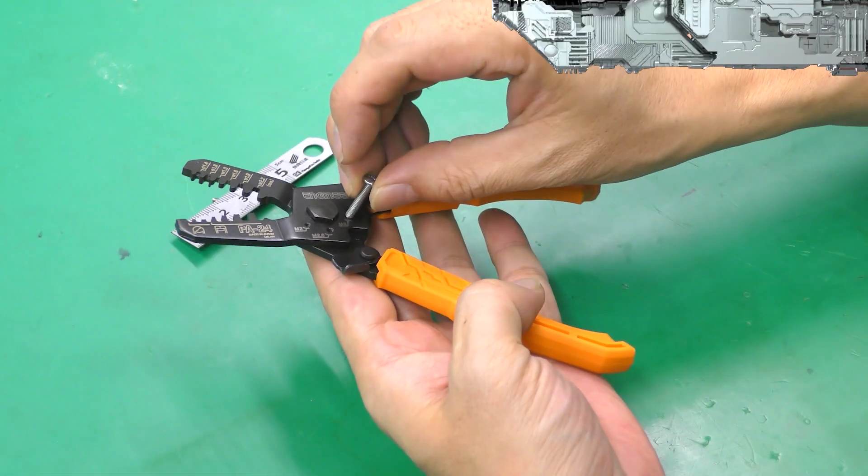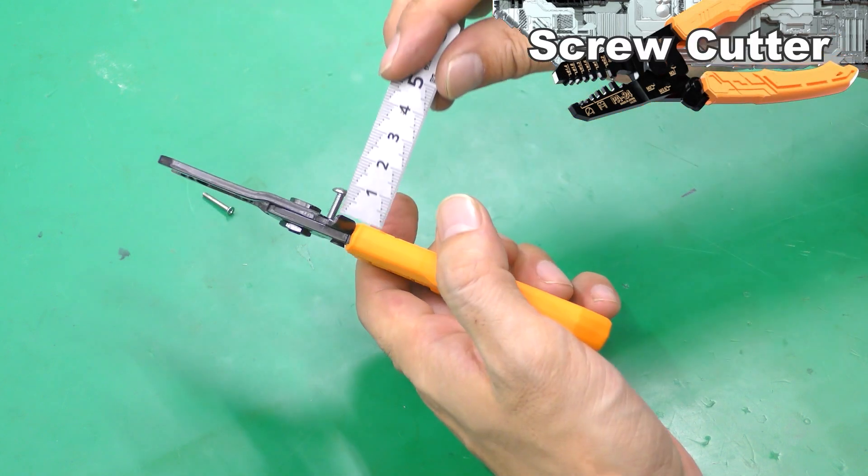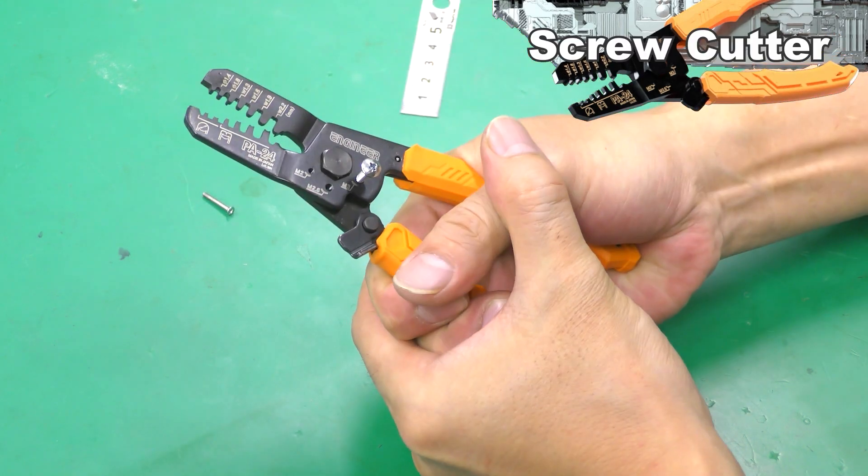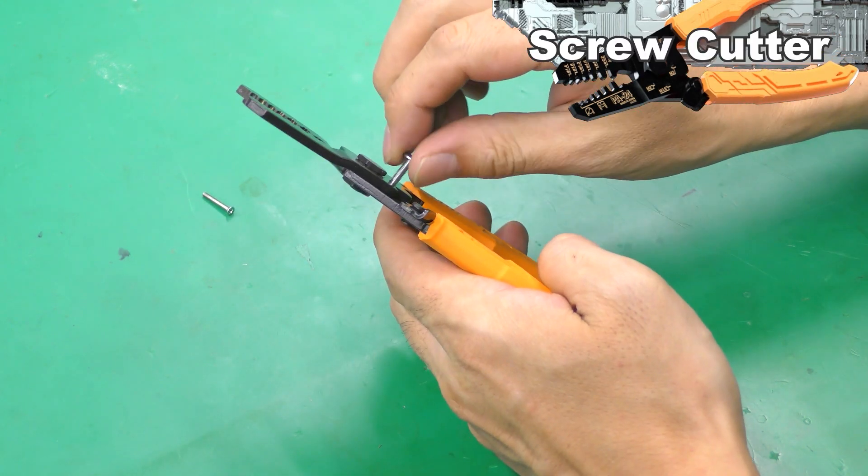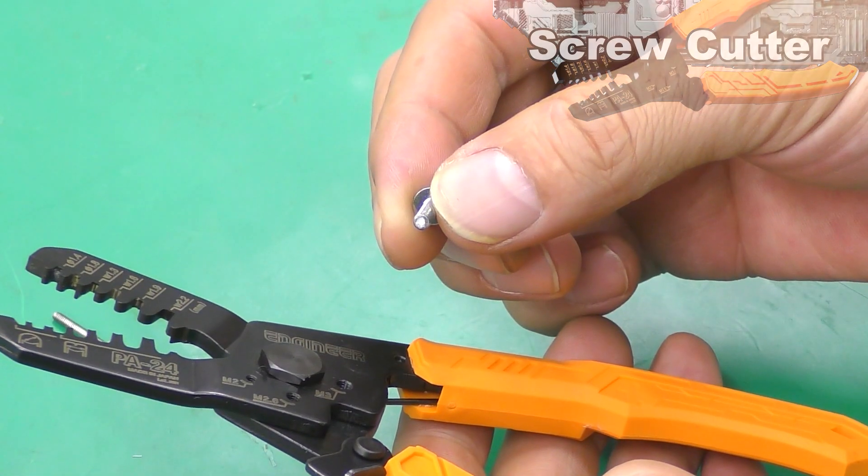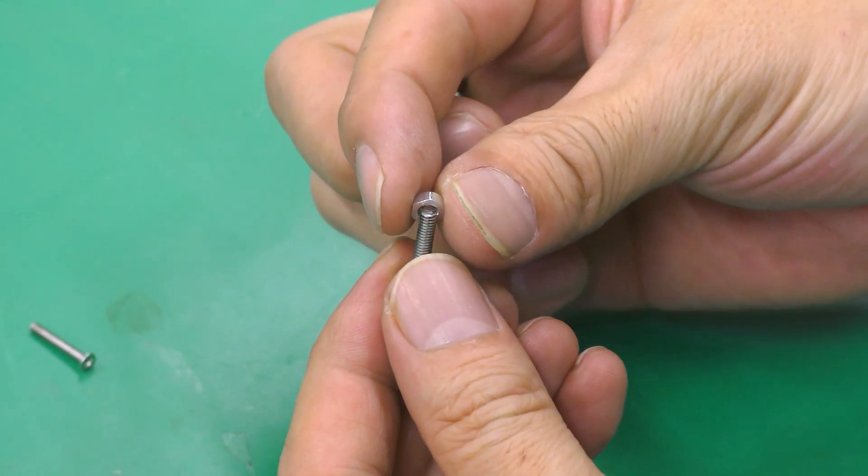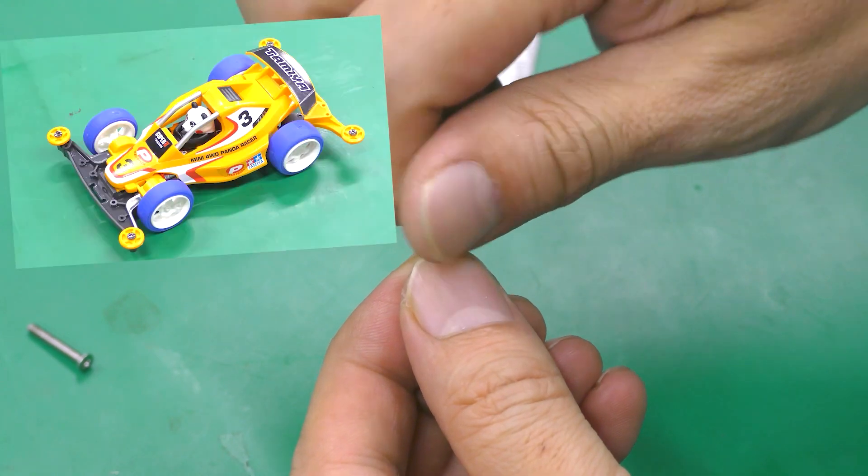Finally, I'll tell you about another function. It's integrated with a bolt cutter that can cut small screws to the required length. The screw sizes of M2, 2.6, and M3 are available. It can be used to assemble RC car motors and Mini 4WD.